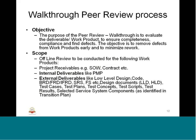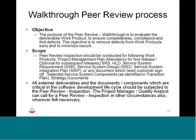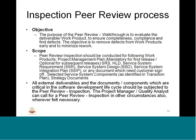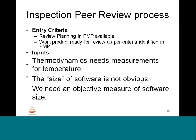The next type of peer review is walkthrough, where objective, scope, entry, input, output, and exit criteria remain essentially the same. The inspection peer review has a group of people gathering together to go through artifacts — the programs, code, SRS, HLD, LLD — and identify errors in the existing program, also suggesting improvements in terms of efficiency. This also has entry, input, output, and exit criteria.